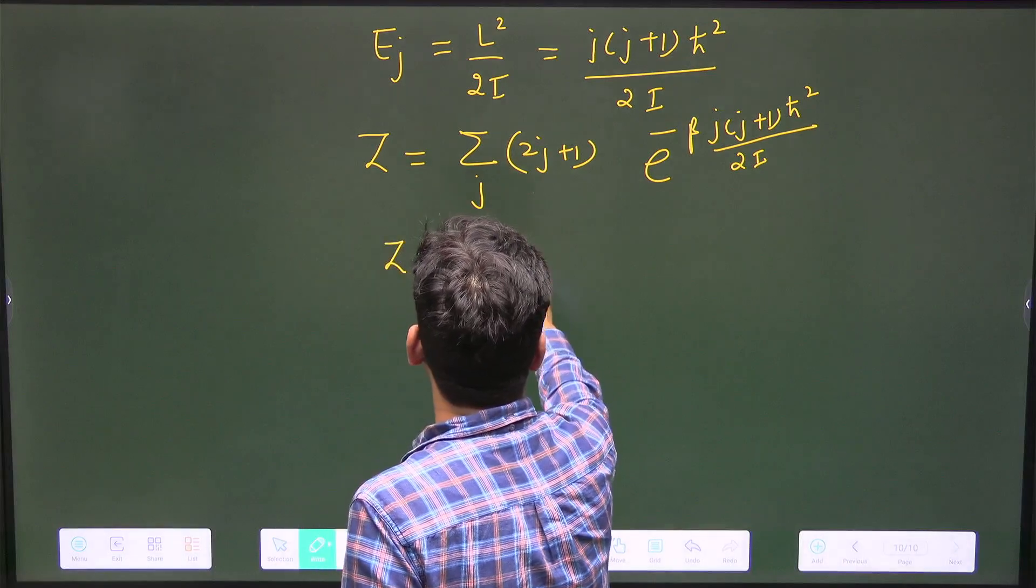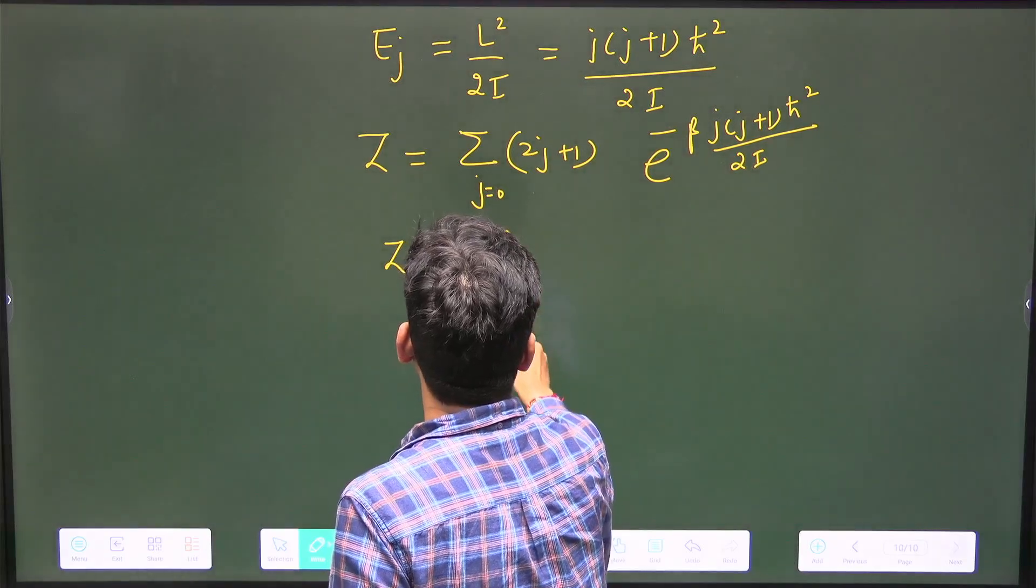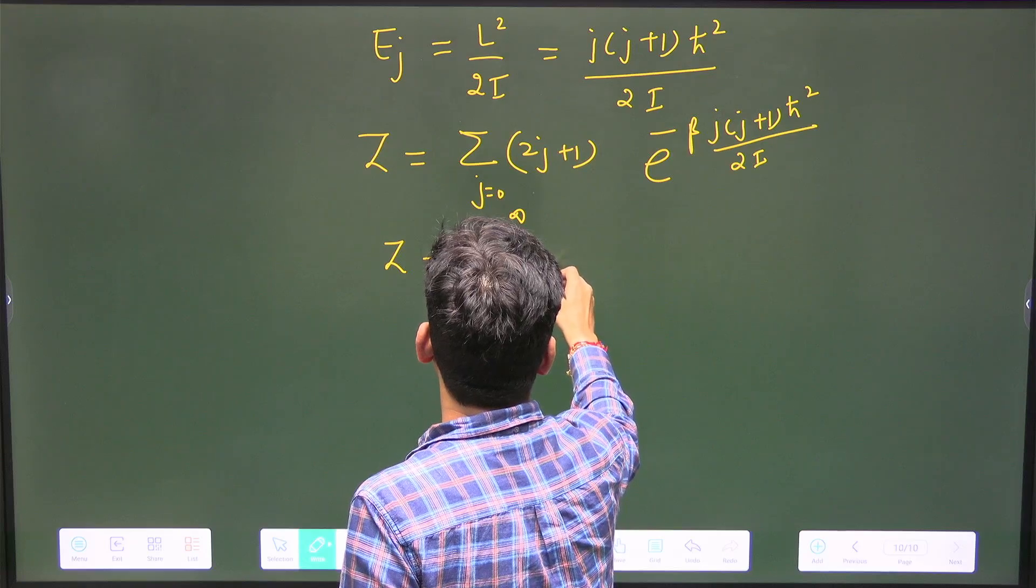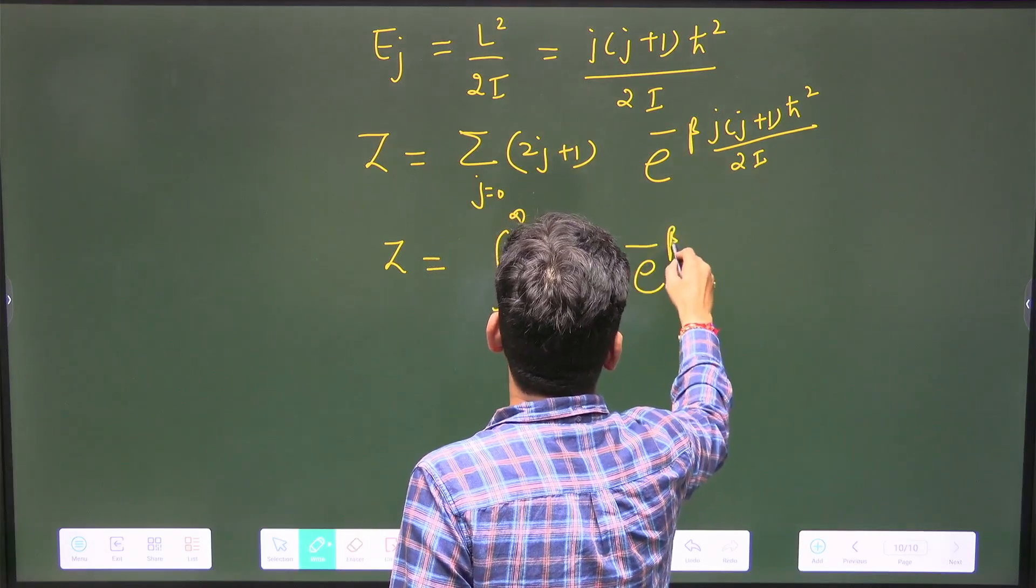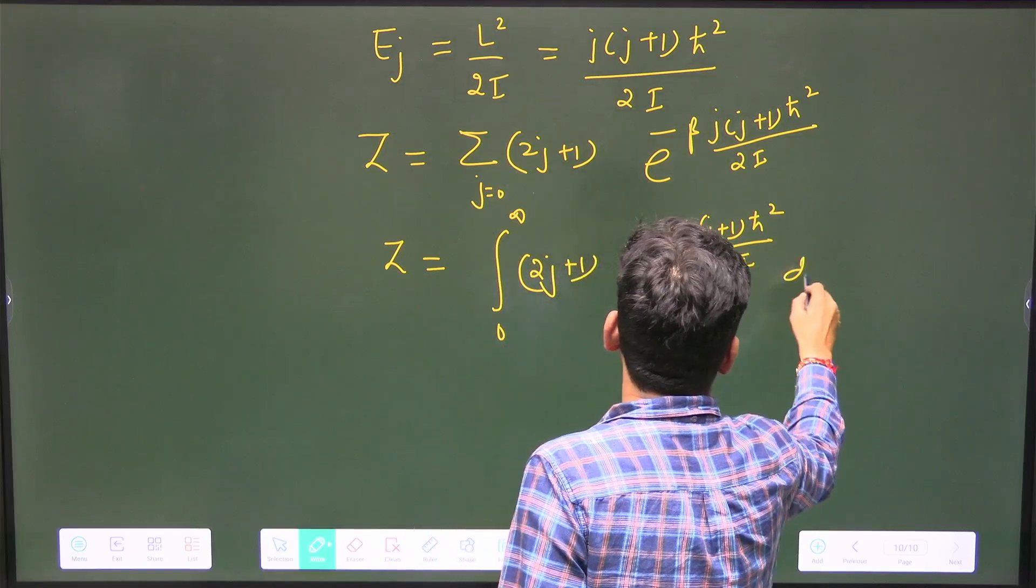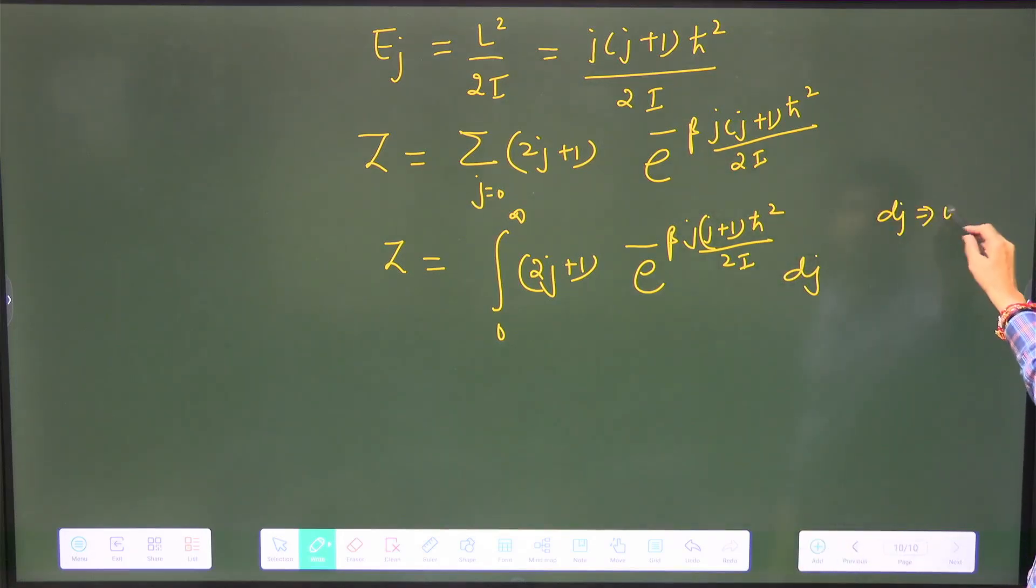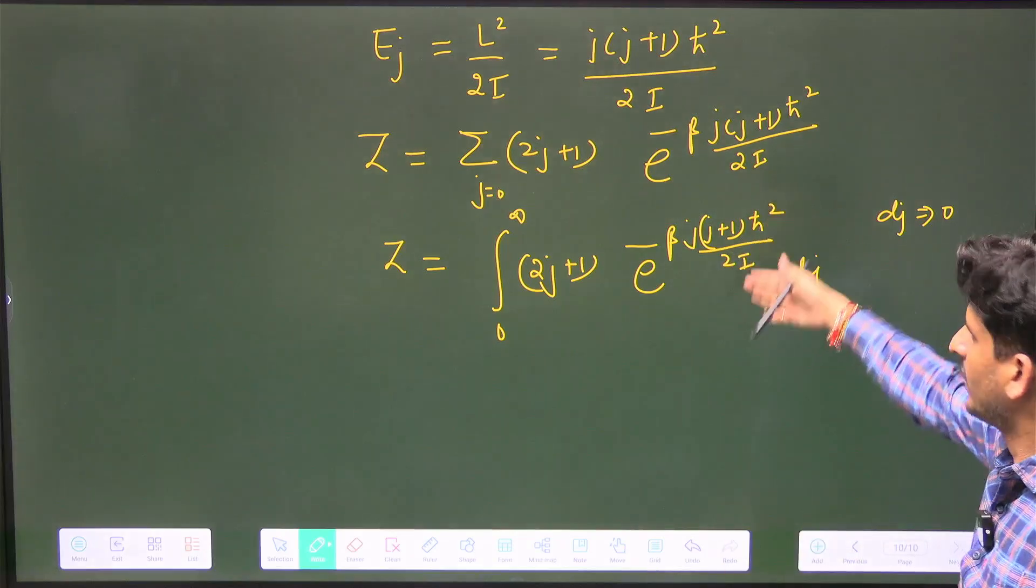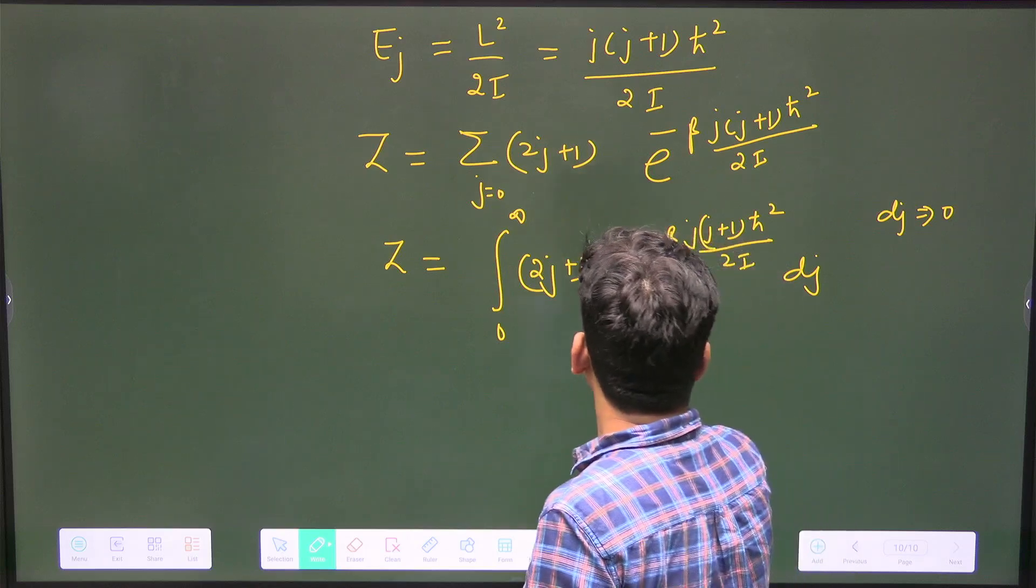The partition function Z: since j starts from 0, write it in continuous form as an integral from 0 to infinity of (2j+1) × e^(-β j(j+1)ℏ²/(2I)) dj. Since dj is very small in calculus, we can take any value of j. This converts from quantum to classical and can only be done when the temperature is very high.